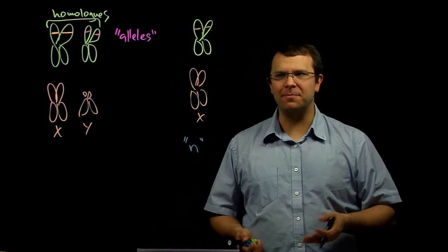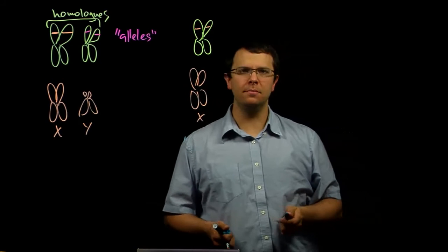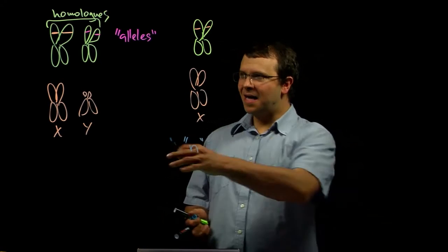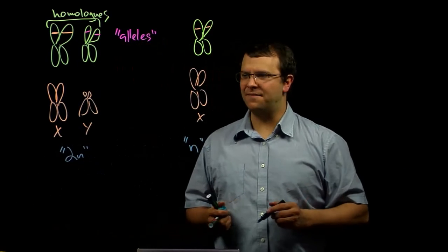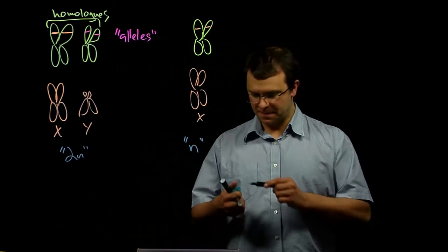where N is a variable, in this case N equals 2, then non-gamete cells have twice that number. They have 2 times N chromosomes.